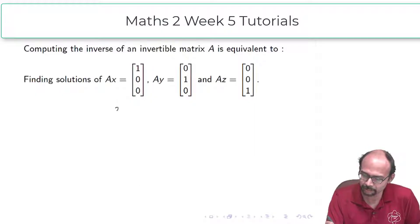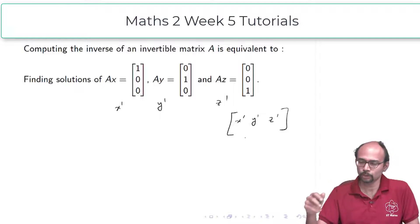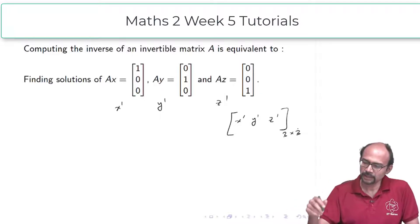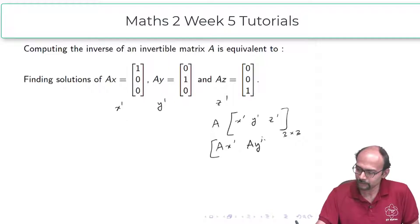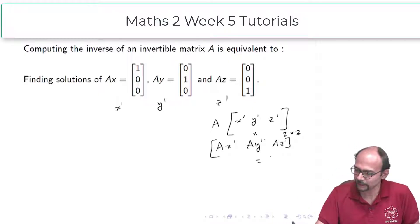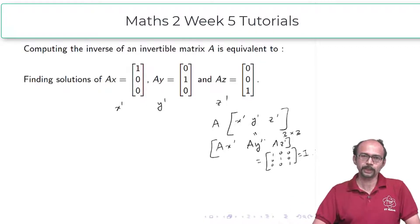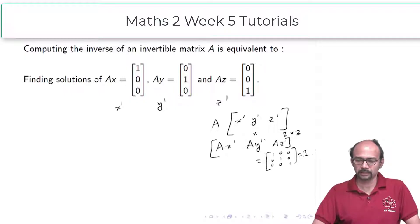Suppose those solutions are given by x prime, y prime, and z prime respectively. Then I make my matrix with columns x prime, y prime, and z prime — remember, these are column vectors — giving me a 3 by 3 matrix. When I multiply A on the left, I get Ax prime, Ay prime, Az prime. But these are solutions to Ax = (1,0,0), Ay = (0,1,0), Az = (0,0,1), so the result is exactly the identity matrix. So if I solve these 3 equations, I find a matrix B with A times B equal to identity, meaning B is the inverse of A.